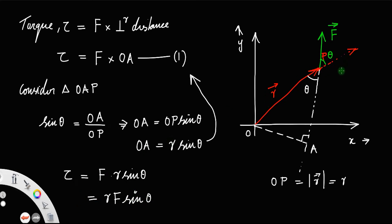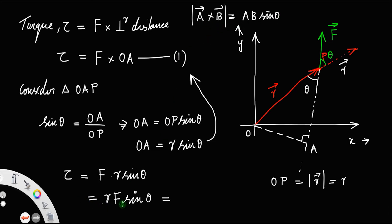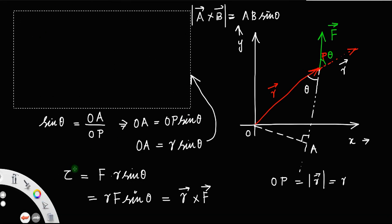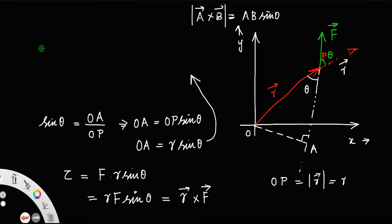If you substitute this value, you get torque tau equals F into R sin theta, or R F sin theta. Now, R and F are the vectors and theta is the angle between them. Since A cross B equals AB sin theta, comparing, R F sin theta equals the magnitude of R cross F. So, in vector form, torque tau equals R cross F.